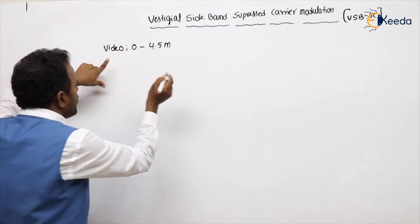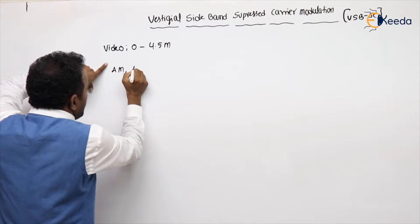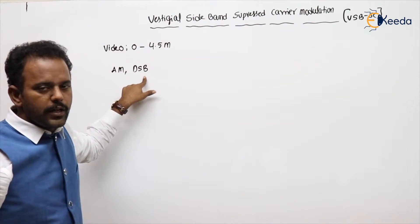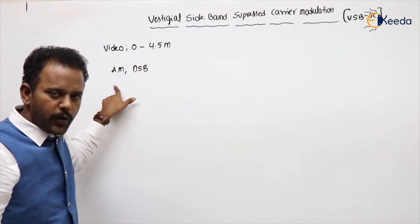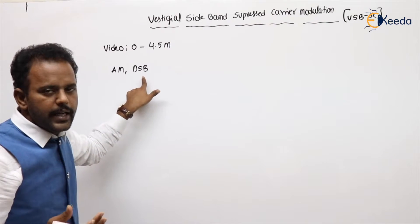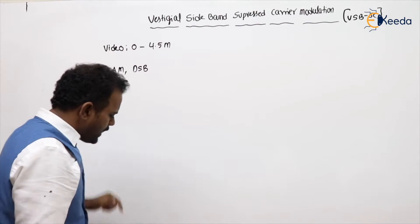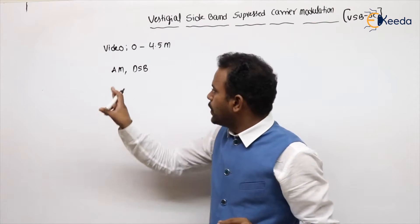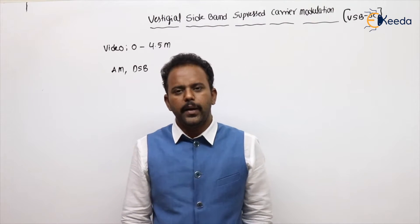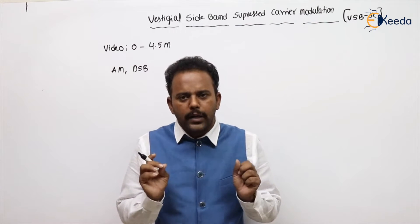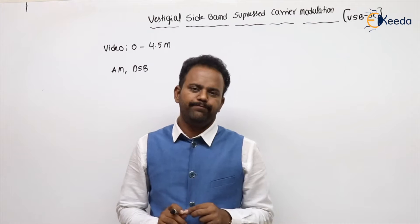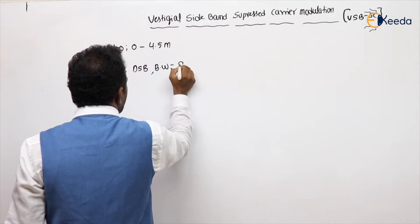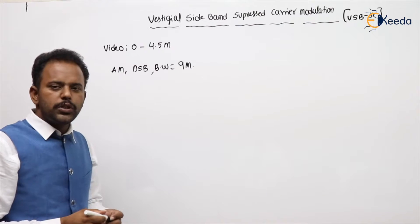Since SSBSC is not possible, what are the remaining options? Either AM or DSBSC. We can generate the modulated signal for video signals using either AM or DSBSC. But if we use AM or DSBSC modulation, what is the bandwidth? Bandwidth is 2 times the message bandwidth — 2 times 4.5 MHz equals almost 9 MHz, which is a huge value.